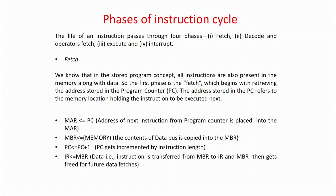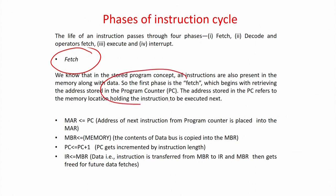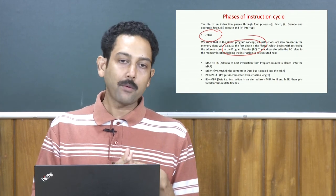The instruction cycle basically has: fetch, decode, operand fetch, execute, and interrupt if needed. We always use the three terms: fetch, decode, execute — where decode includes operand fetch. For fetch: there is a special register called the program counter PC. The PC initially holds the value of the memory location where the instruction starts. For example, if the first instruction is at memory location 0000 hex, PC = 0000 hex, and that instruction will be fetched, decoded, and executed.